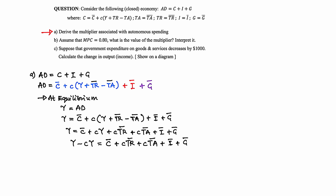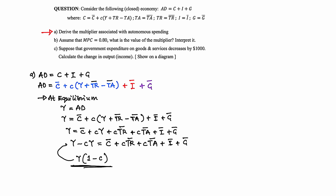Simplifying this: Y minus CY — we take Y out, open a bracket. Once we take Y out, what is left from Y is 1, and from minus CY is minus C. So we have Y times (1 minus C). If you expand this bracket you will end up with the same expression, which is how you confirm your answer.